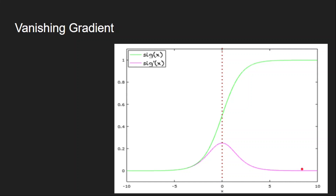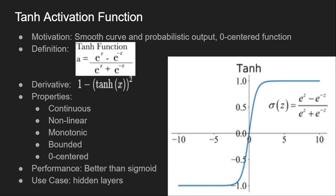The next function is the tanh function. The motivation came from looking for a zero-centred function. It is also a smooth curve and has a probabilistic nature, but the range is between -1 and +1. The curve looks the same as sigmoid but the range is -1 to +1, so it has negative values in the output and is therefore a zero-centred function.